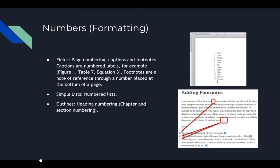Numbering can be used when numbering your pages. Captions are used as labels — like figure 1.2 tables or equations in science or math textbooks. Footnotes are used as a note of reference, where a number references an explanation at the bottom of the page. There are also numbered lists and heading numbering for chapters and table of contents.